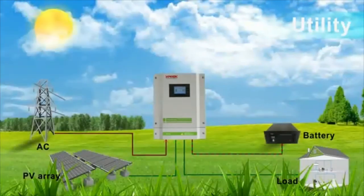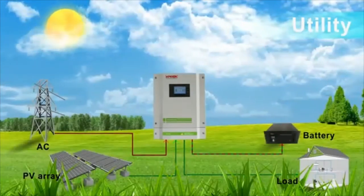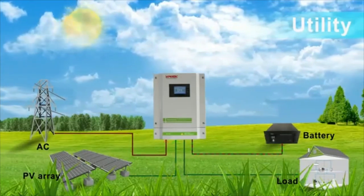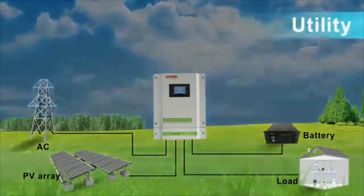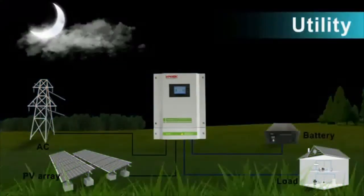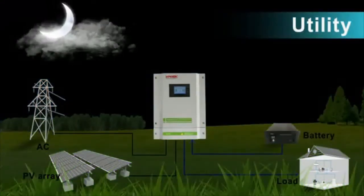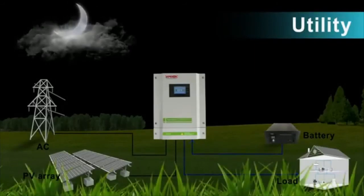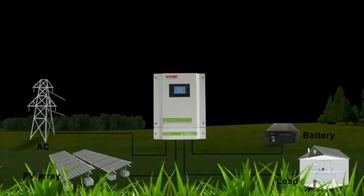Mode 4: The utility will first power the load, with solar charging the battery. Solar and battery energy provides power when utility power is not available.